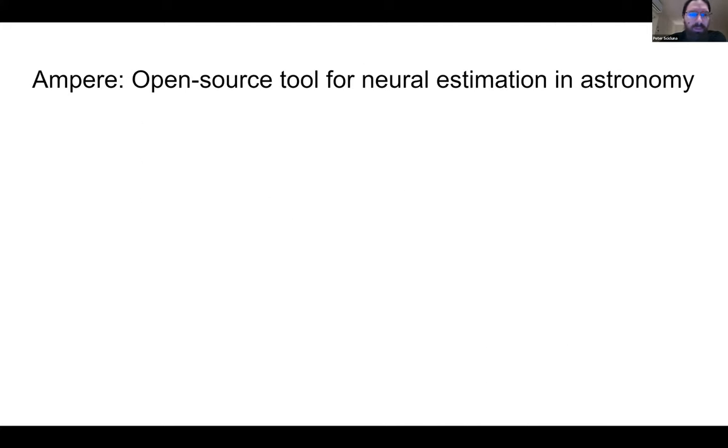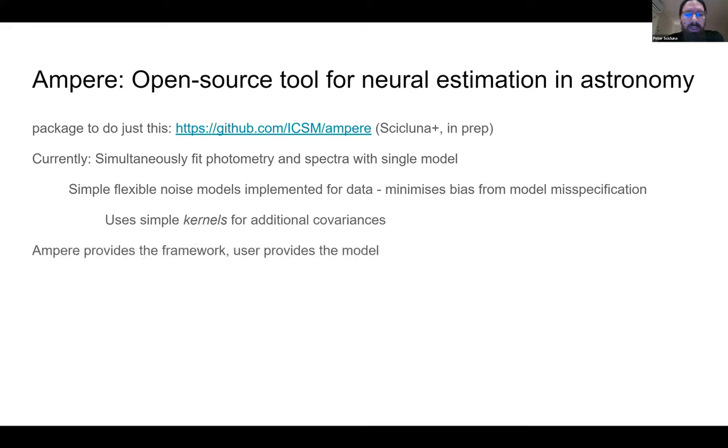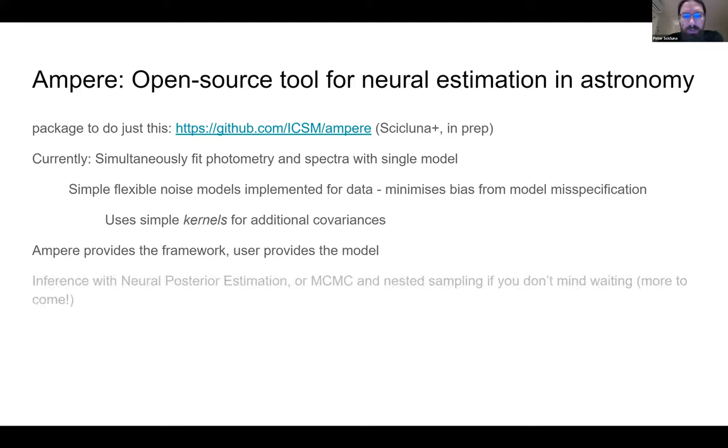Okay, so now I'm going to mention briefly this toolkit that we've been developing to make it easier for you to apply these techniques. It's called Ampere. It's an open source package that's online, that's written in Python. It can fit your photometry and spectra simultaneously with a single model. And it can include some of these noise models to minimize biases from missing physics, missing information in your model. And basically the idea is that Ampere is a framework that you can just go and use by writing a thin wrapper to your own model to get it into a state that Ampere will understand. You can use neural estimation and it also provides access to some MCMC and nested sampling libraries.